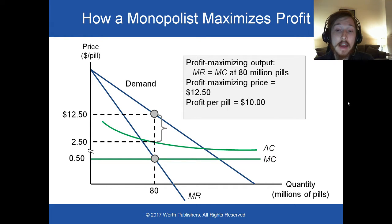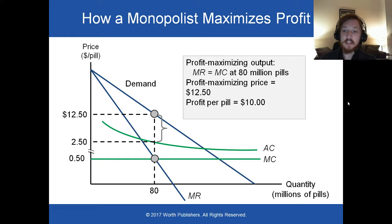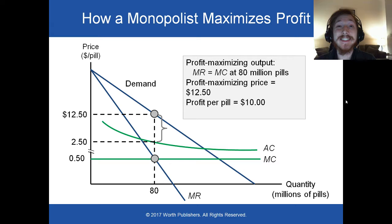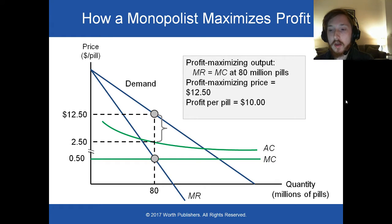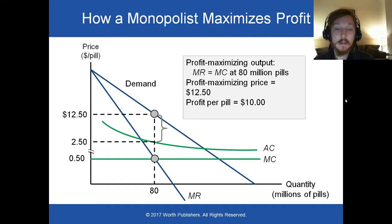We set the price at $12.50. The average cost per pill is $2.50, which is higher than the marginal cost — because there are significant fixed costs in the production of AIDS pills, such as research and development.